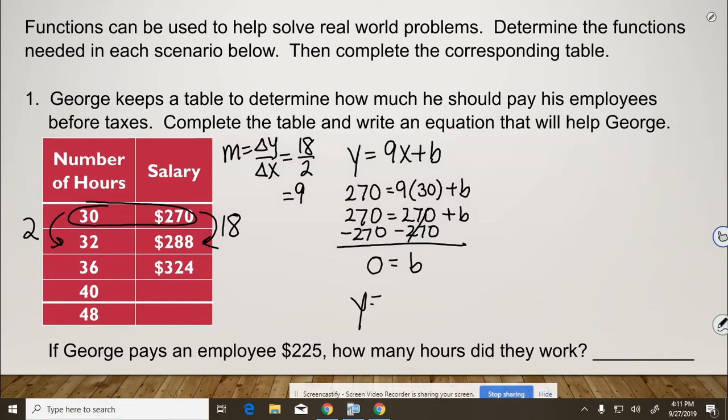So that means our equation is just y equals 9x, which means this is a proportional relationship. We could check it. If we did 30 times 9, we'd get 270. If you do 32 times 9, you should get 288. And 36 times 9 would be 324.